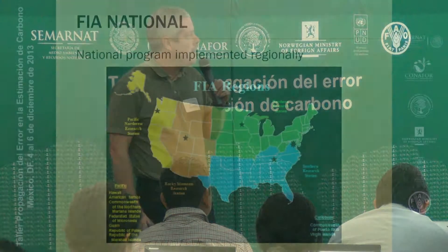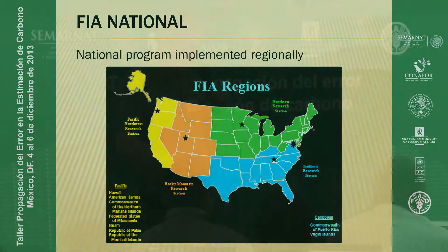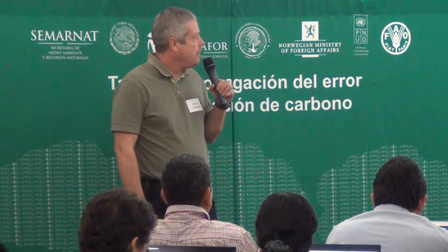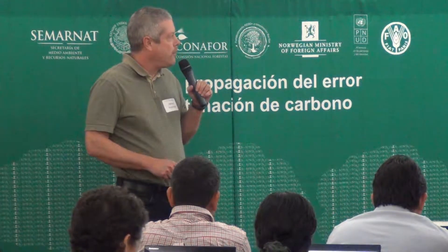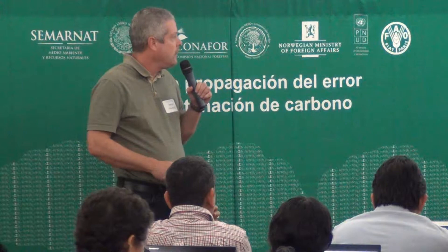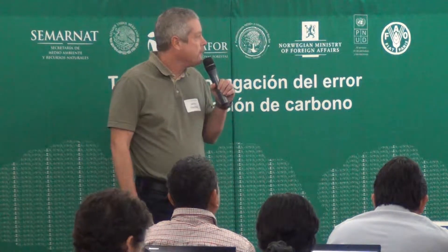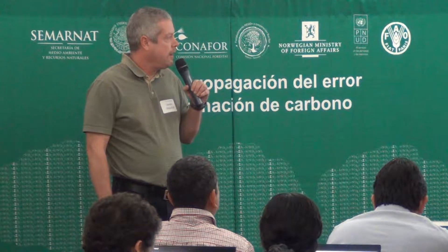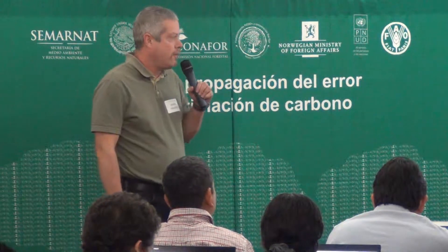FIA is conducted across the country with four different regions. There's the Pacific Northwest, which handles most of the West Coast states, Alaska, Hawaii, and a number of Pacific islands. There is the Interior West FIA, located in Ogden, Utah, responsible for many of the Interior Western states. Where I'm from, the Northern Station, FIA headquarters is in St. Paul, Minnesota, with a 24-state region. The Southern FIA unit handles much of the Southeast and Mid-South states, as well as Puerto Rico and the Virgin Islands.